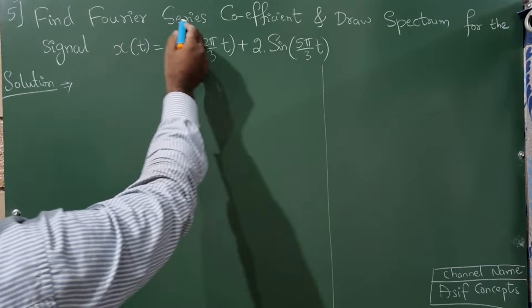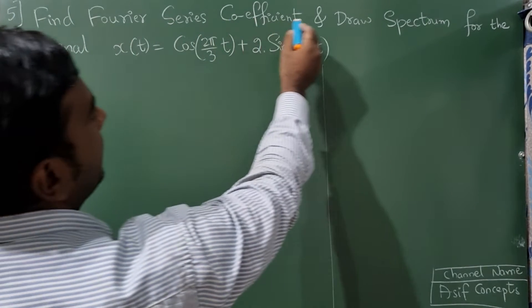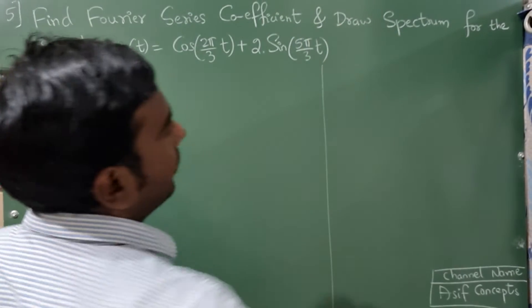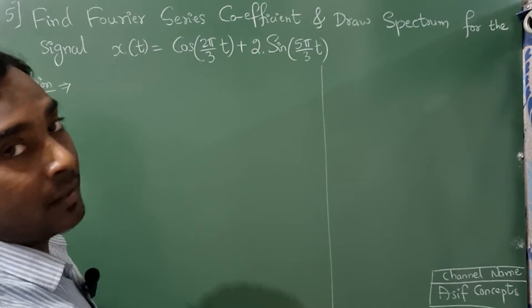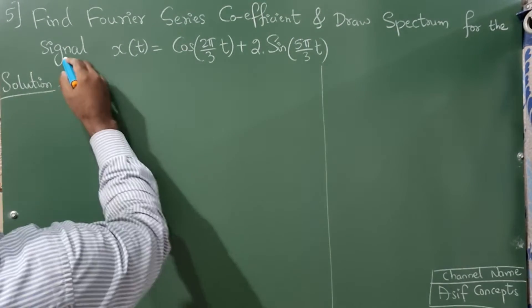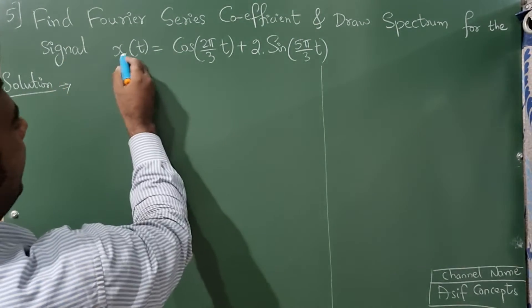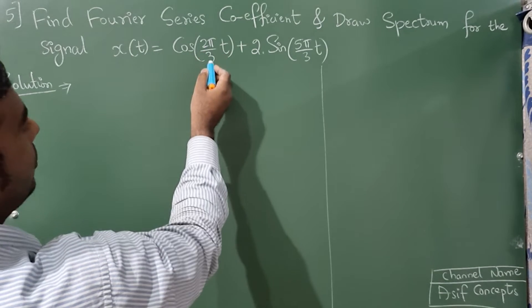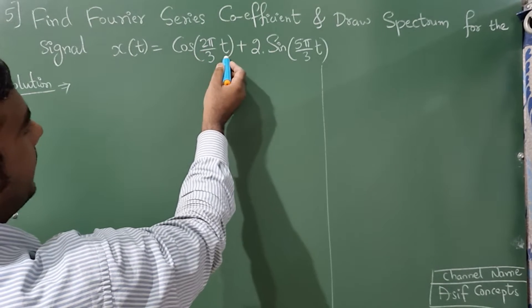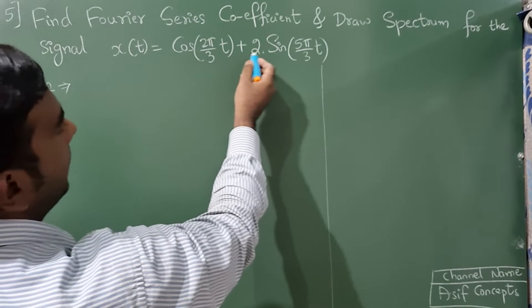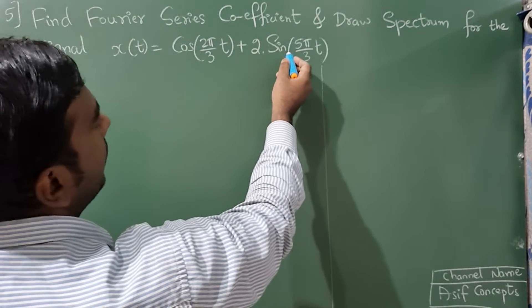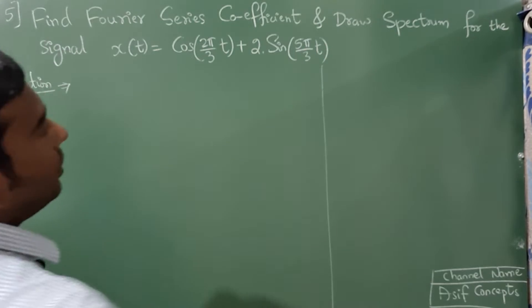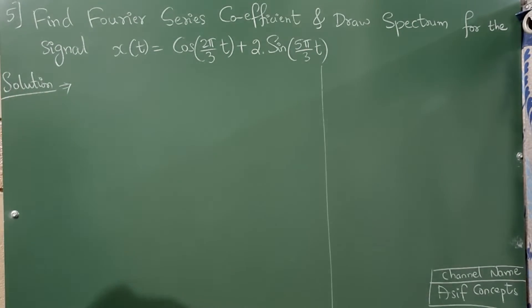Find the Fourier series coefficients and draw the magnitude and phase spectrum for the signal x(t) = cos(2π/3 · t) + 2·sin(5π/3 · t).